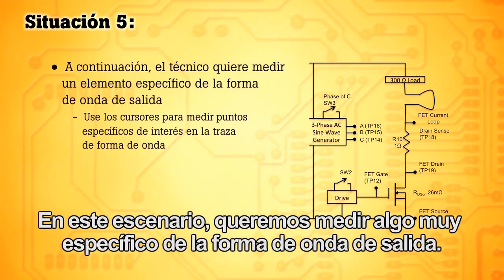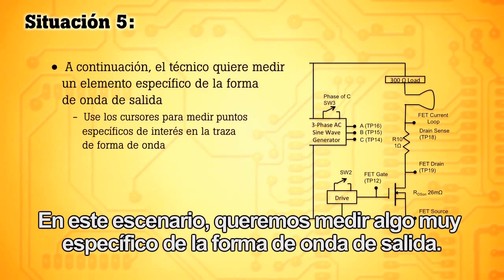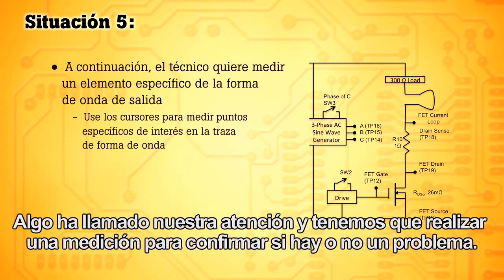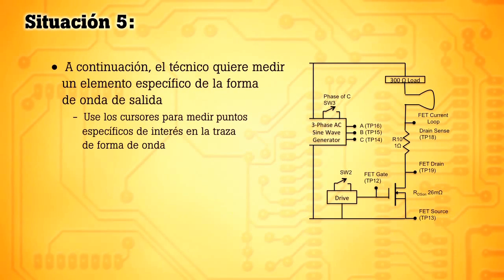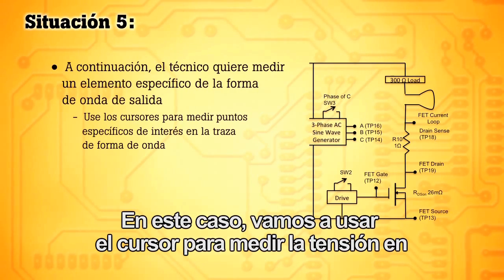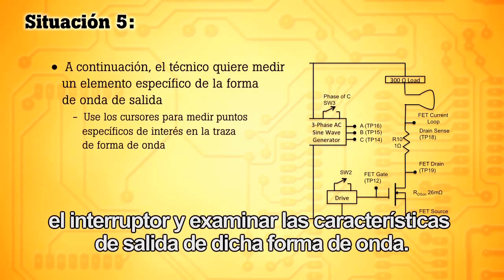In this scenario, we want to measure something very specific on the output waveform. Something has drawn our attention, and we need to take a measurement to validate whether or not there's a problem. In this case, we're going to use the cursor to measure the voltage across the switch and look at the characteristics on the output of the waveform.